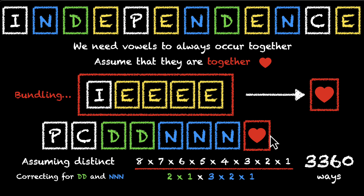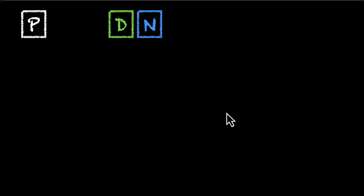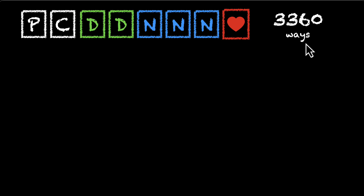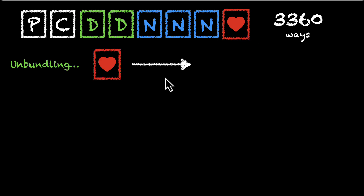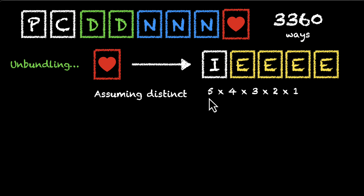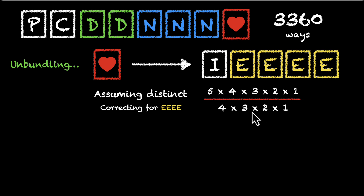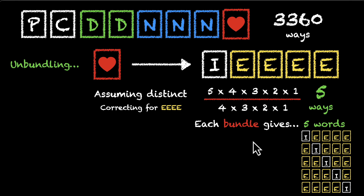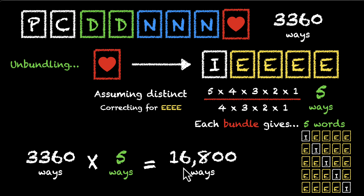But we also have to unbundle the vowels back. Inside the bundle we have I, E, E, E, E — five letters. As a sub-problem, assuming all five are different gives 5! ways. We correct for four E's by dividing by 4!, which simplifies to 5 ways. So whenever we open the bundle, we get five different arrangements. Multiplying 3360 by 5, we get 16,800 ways to arrange the letters of independence such that all vowels are always together.